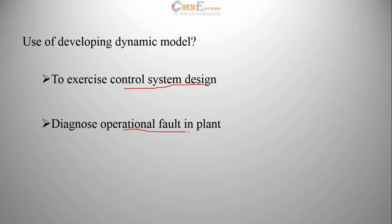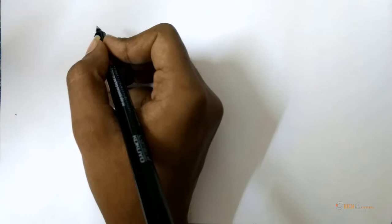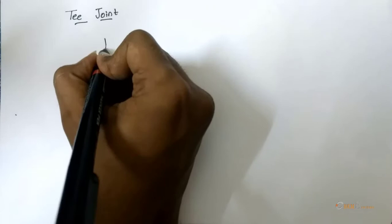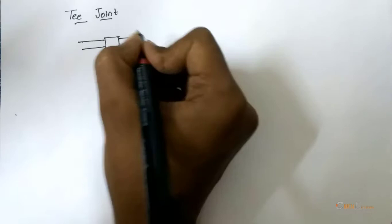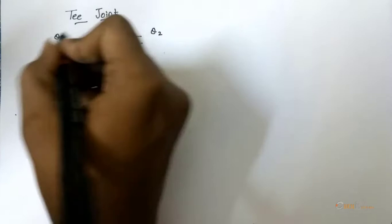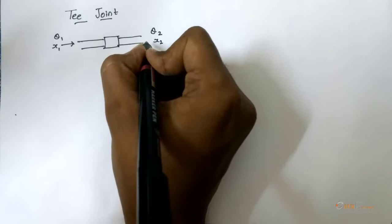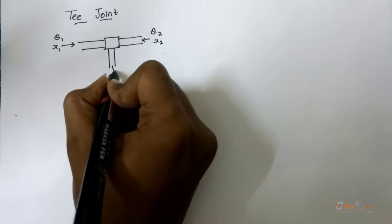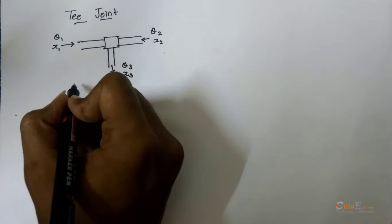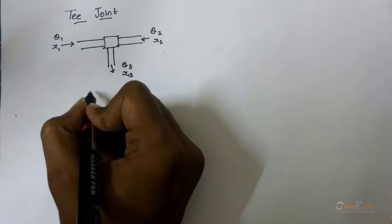Now, I will take a few examples to show the difference between a steady-state model and a dynamic model. Let us consider a T joint. For a T joint, we are giving two inputs. Mixing takes place in negligible time and negligible volume. So, there is an assumption.